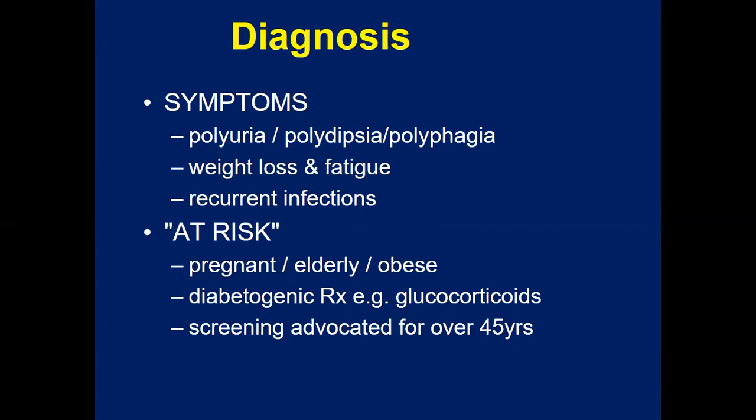Those at risk — pregnant females, elderly people, and obese persons — must be screened and have lab tests done to assess for diabetes. Additionally, patients using diabetogenic drugs like glucocorticoids in different conditions must also be assessed for hyperglycemia and blood glucose levels.